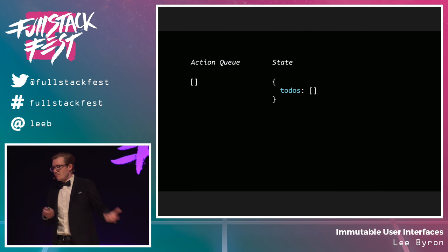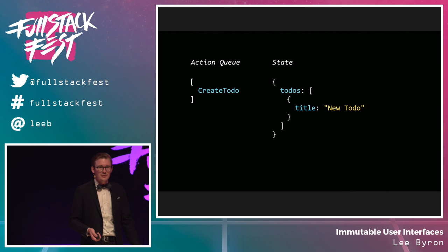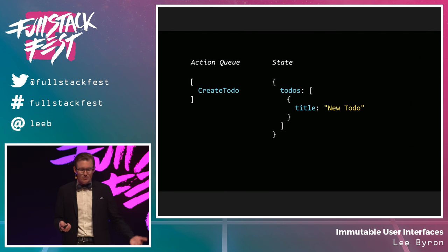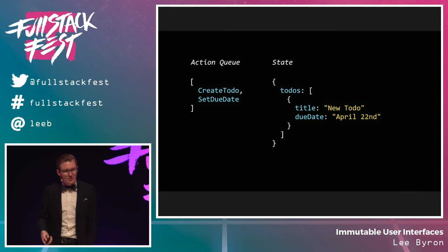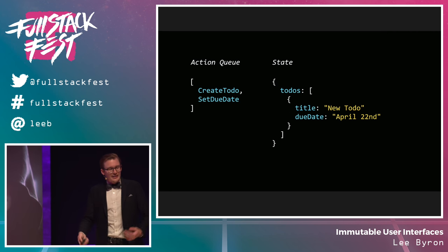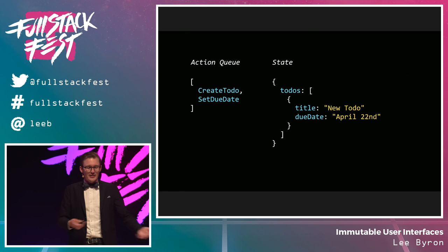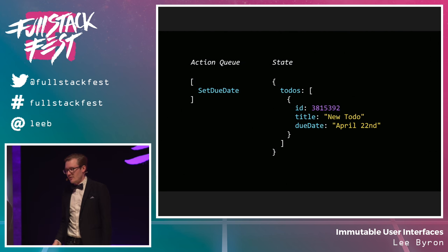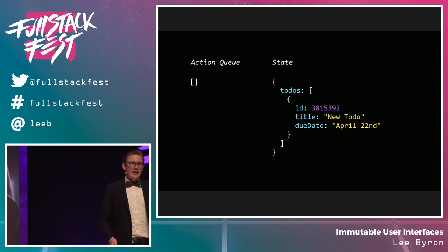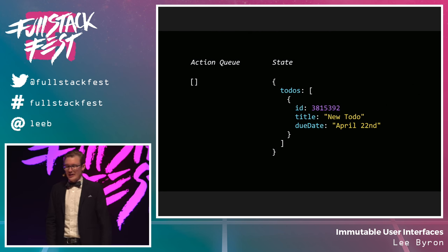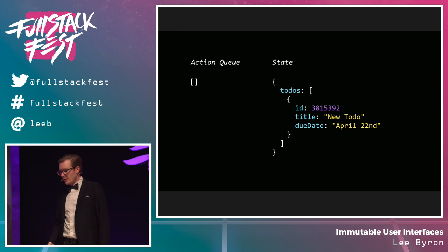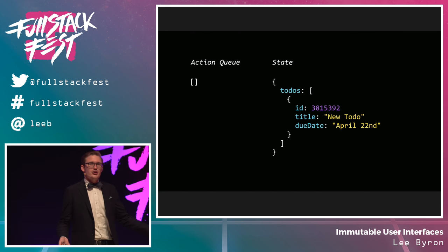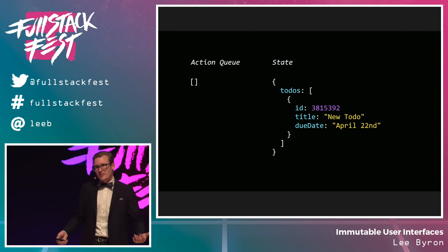This lets us model apps where we can create a to-do item and make changes to it even before the server knows it exists. We don't know how to tell the server to set the due date of a to-do it hasn't confirmed yet — so we wait for the server to return the unique ID, then replay the action to get a new optimistic state, and then send the server the right info. This kind of behavior is typically really hard to do without creating race conditions, and this technique lets us avoid the majority of them.